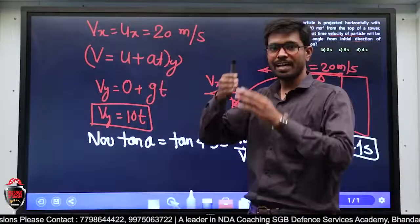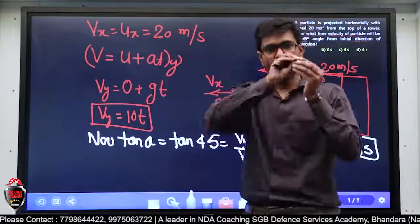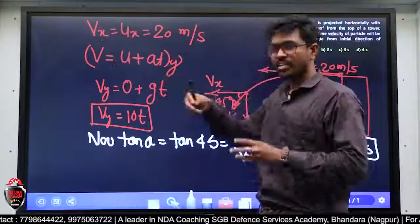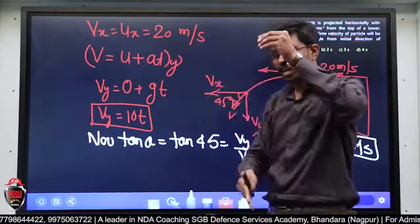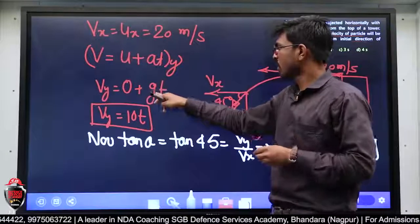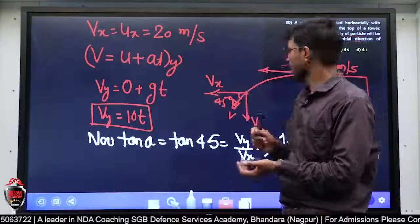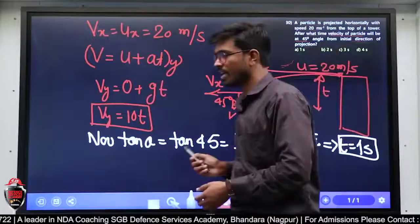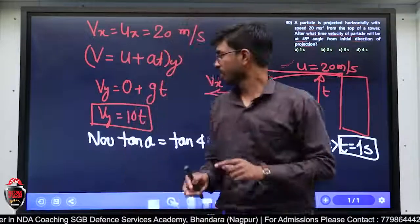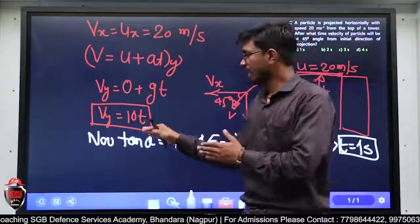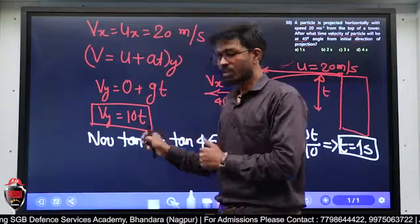Initial velocity in y direction है नहीं, क्योंकि ball को x direction में project किया है। Acceleration in y direction is +g, और यहाँ से यहाँ तक जाने में लगने वाला time है t। t put करने पर velocity in y direction मिल गई।